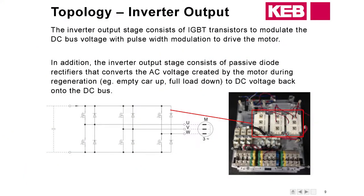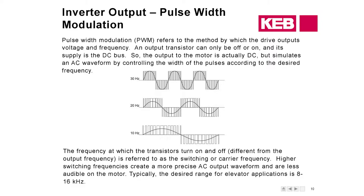Moving on to the output of the drive — this is where the IGBTs are. In this example you can see three separate modules, one for each phase. The units in front of you have them on one single module, just a variation in hardware layout. The IGBTs pulse on and off very quickly — that quick pulsing is referred to as PWM, pulse width modulation. That uses a carrier frequency, or switching frequency, which is different from the frequency output to the motor. So if you're troubleshooting and you see you're outputting 30 Hz to the motor, that is different from the carrier frequency.